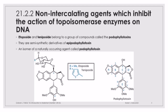Epipodophyllotoxin is an isomer of a naturally occurring agent called podophyllotoxin. Looking at the structure of podophyllotoxin, there is a bond at carbon number four that goes into the plane of the paper — below the plane. This difference in stereochemistry is why we call it an epi-isomer of the natural product podophyllotoxin.